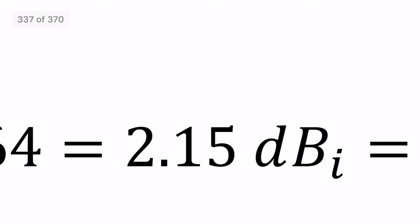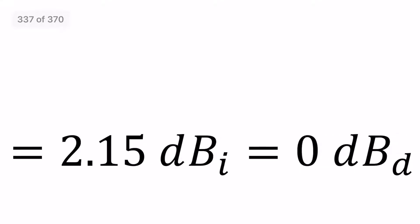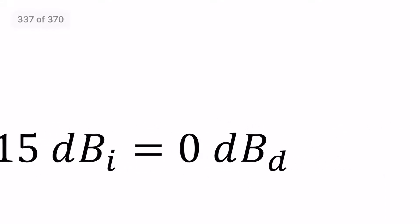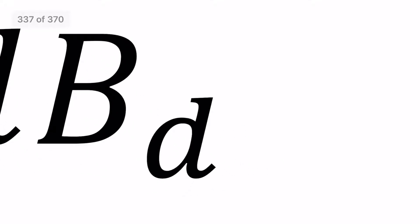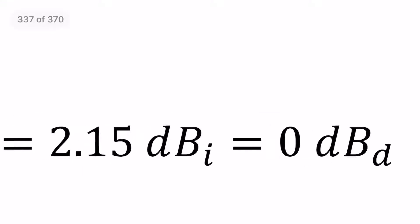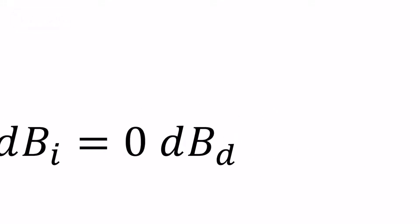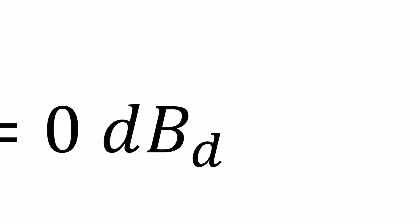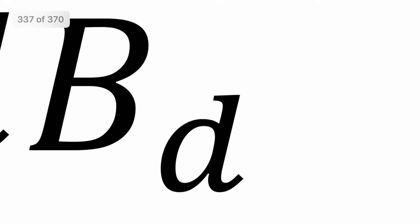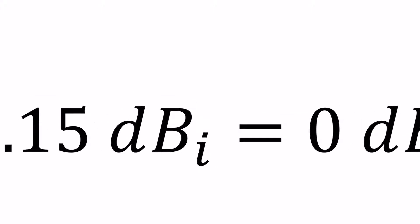This is 2.15 dBi, where the reference is an isotropic antenna. The decibel value relative to isotropic is 2.15 dBi. For a dipole antenna, consider the ratio: the dipole antenna directivity is 1.64. Comparing dipole to dipole gives 0 dBd. dBd is the value when the reference antenna is a dipole antenna; dBi is the value when the reference antenna is isotropic.